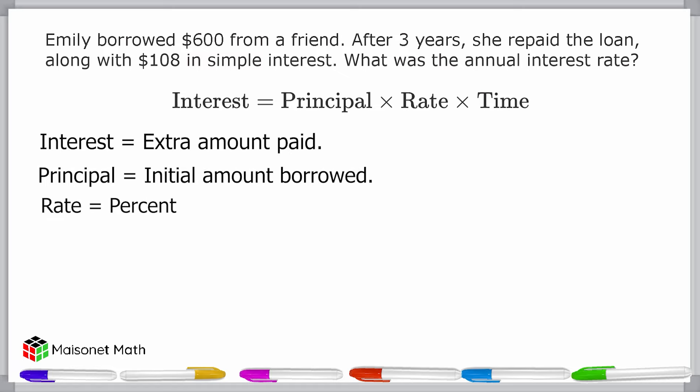The principal is the initial amount borrowed or invested. The rate is the annual interest rate, which is what we're trying to find in this problem. And T, or time, is the length of time the money was borrowed or invested, in this case, years.